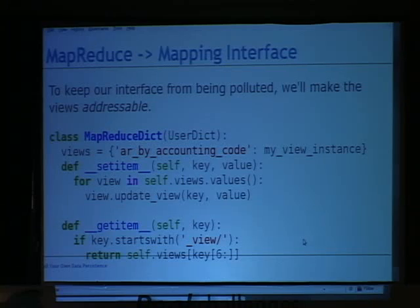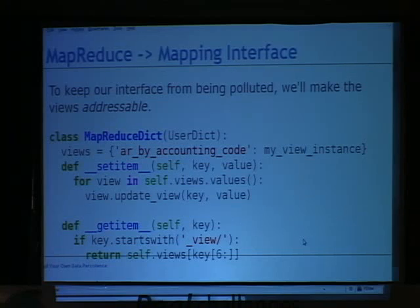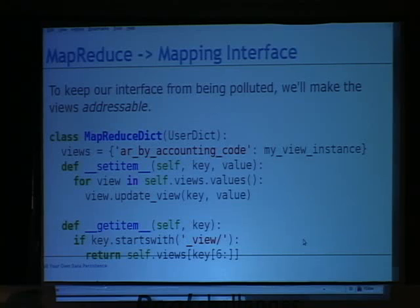We can also make the MapReduce implementation into a UserDict. The MapReduce view becomes a UserDict that stores data in different places for intermediary output and implements map and reduce methods. We wrap it around the store using a MapReduceDict — on __setitem__ it updates each view in the view dict, and on __getitem__ views are made addressable. To avoid polluting the dictionary interface, if we prepend a key with _view we get that particular view.